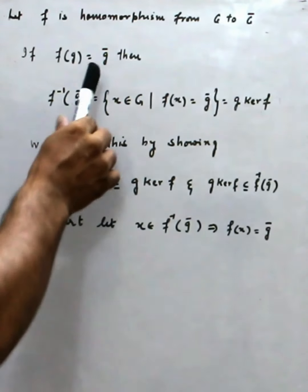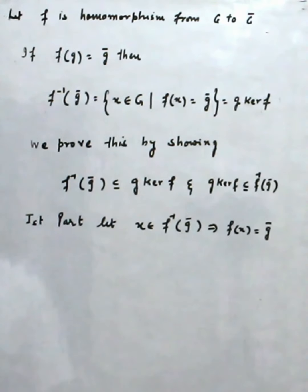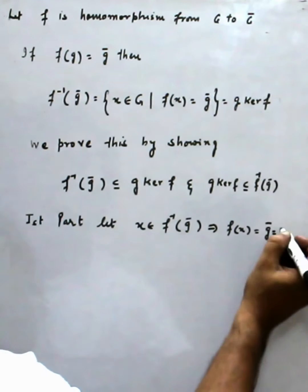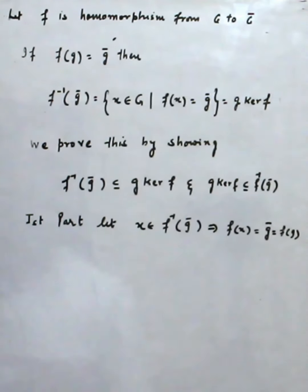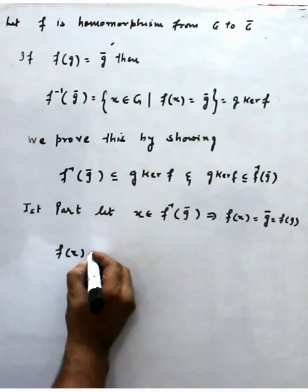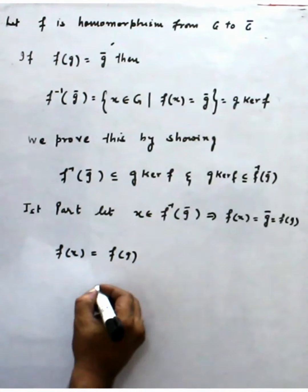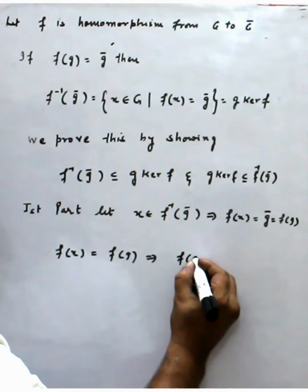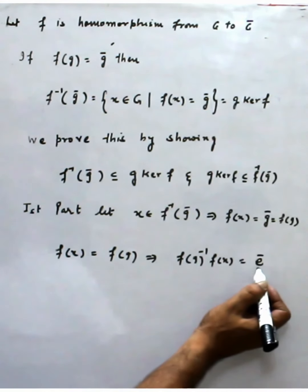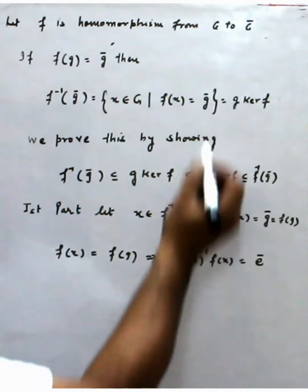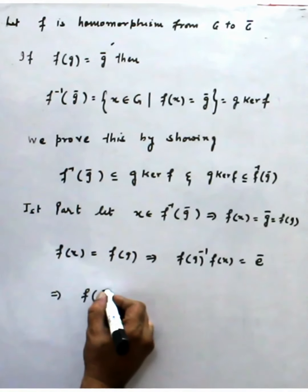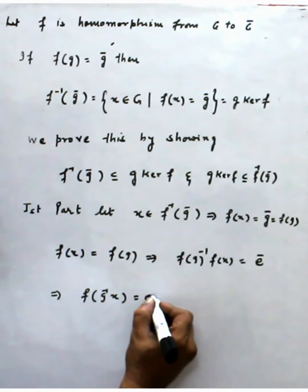Now from here, since f(g) = ḡ, we can substitute to get f(x) = f(g). Bringing terms to one side, f(g)⁻¹ · f(x) = identity ē. This identity is taken from G-bar since both f(x) and f(g) are elements of G-bar. This gives us f(g⁻¹x) = ē-bar.